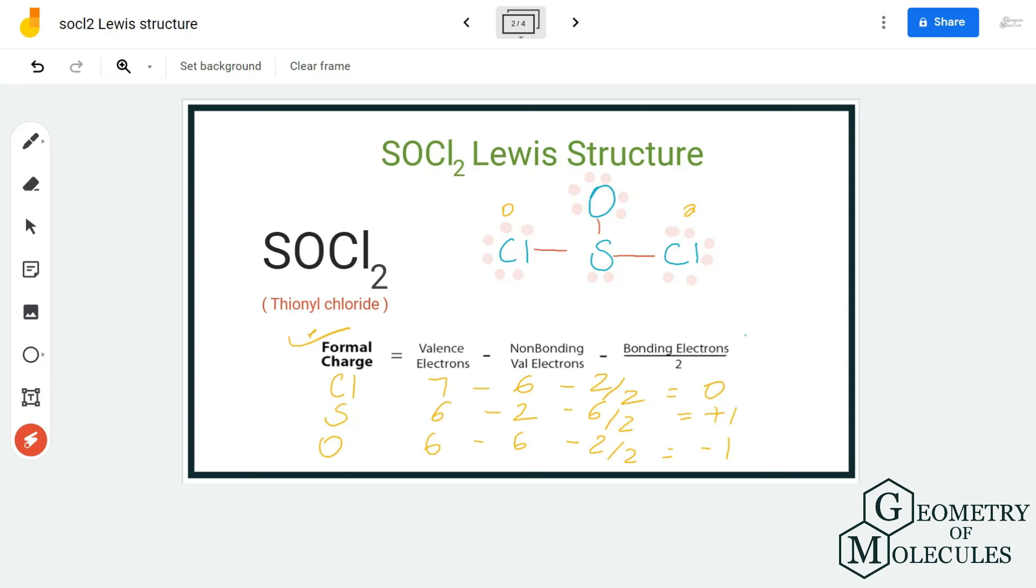But whenever we are writing the Lewis structure for any molecule, we try to come up with a structure in which atoms have charges closer to 0. We can try doing that by shifting a pair of electrons from this oxygen atom in between sulfur and oxygen atom.